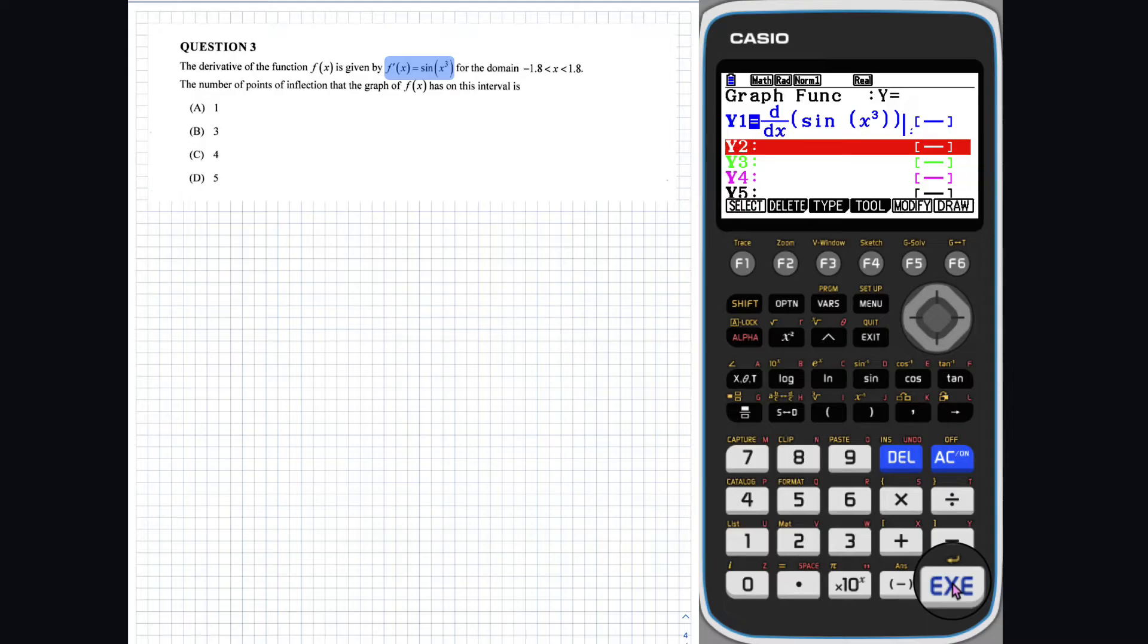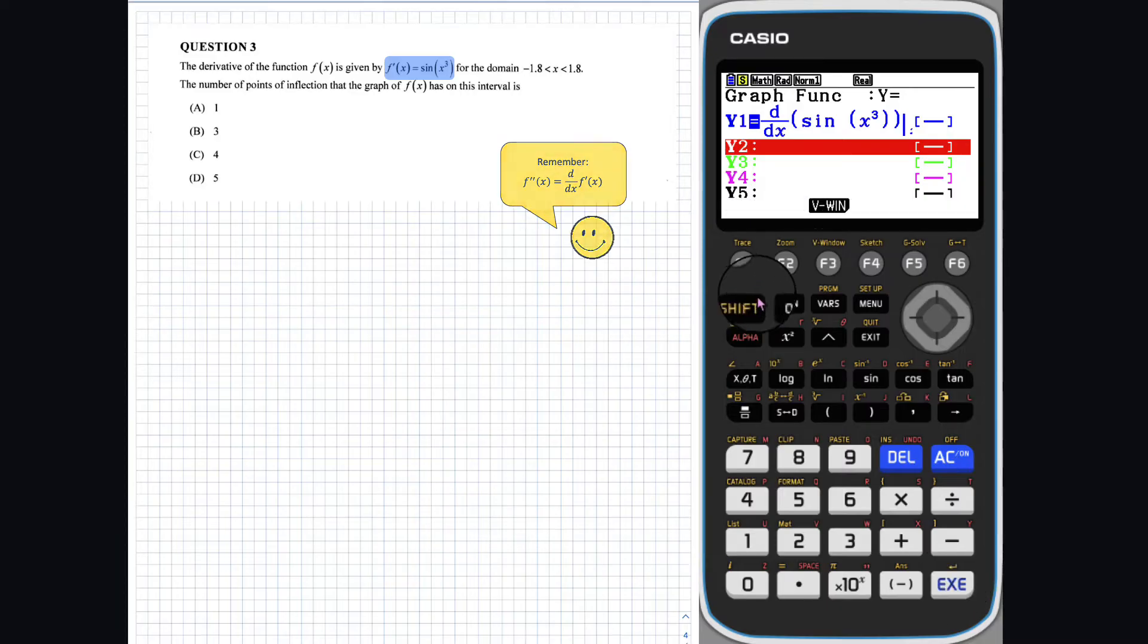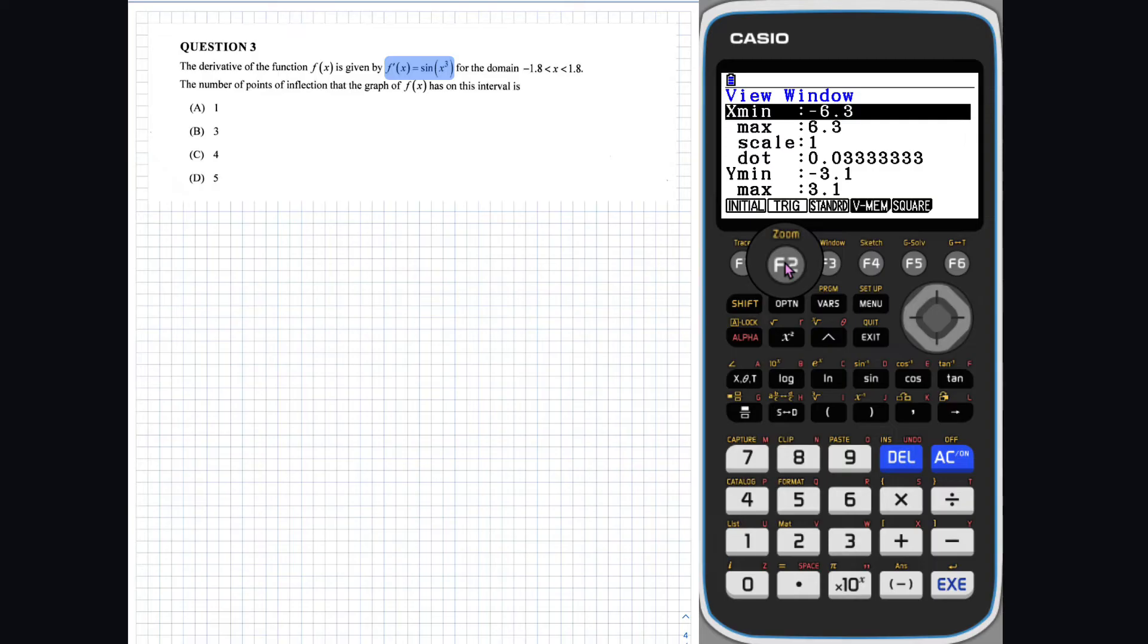Now, remember, we were given the derivative of f of x. So, here, we only need to graph the derivative of f dash of x to get the second derivative of f of x. We will change the view window to trig and then adjust the x values so they lie in the domain given in the question.